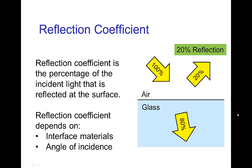The reflection you get from a material which is at least partially transmitting the light is determined by the reflection coefficient. The reflection coefficient is simply the percentage of the incident light that is reflected at the surface. That reflection coefficient depends on the materials of the interface — what's on each side of the interface, for example, air and glass.